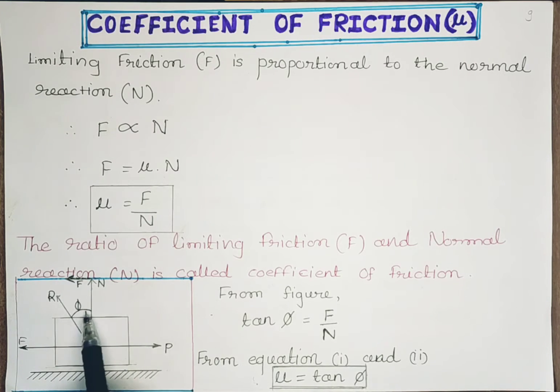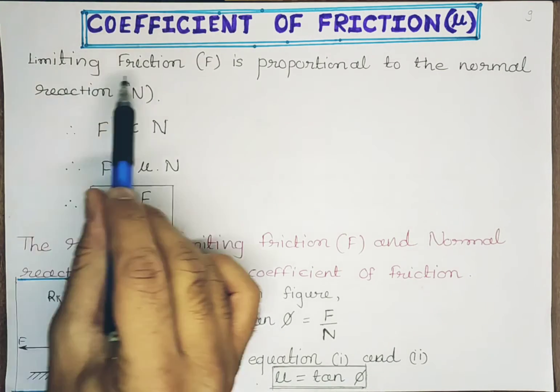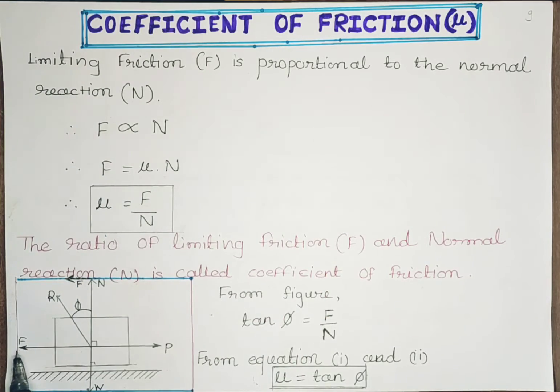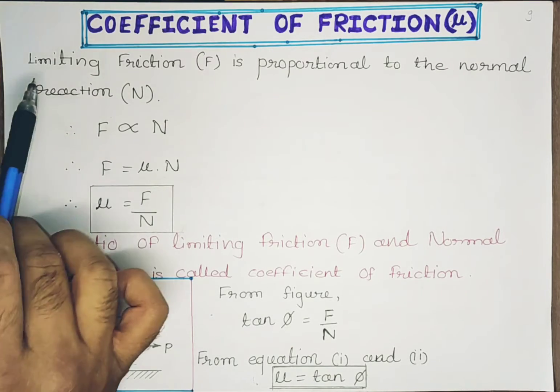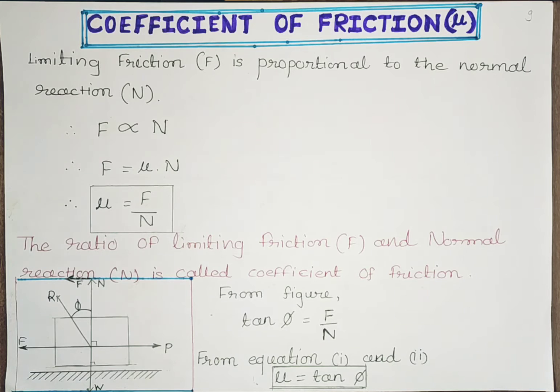The angle of friction φ (phi) is the resultant of normal reaction and frictional force. We would say that limiting friction F is proportional to the normal reaction N. Limiting friction is the minimum frictional force developed due to the minimum force required to move the box.